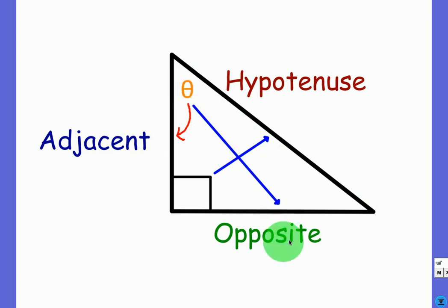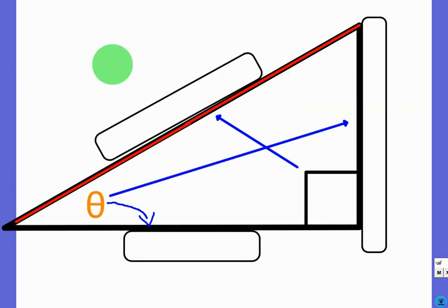So, in this case, this would be the opposite side. Hypotenuse would still be the angle opposite the right angle. Adjacent would be the other side, next to the theta that's not the hypotenuse. So, keep that in mind.